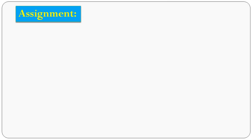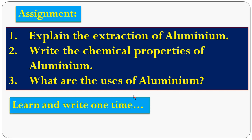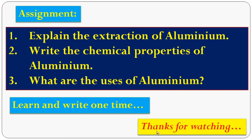Now do the assignment. Very important questions: First, explain the extraction of aluminum with a neat diagram. Second, write the chemical properties of aluminum with equations. Third, what are the uses of aluminum? Learn these three questions and write them out. Thank you, students.